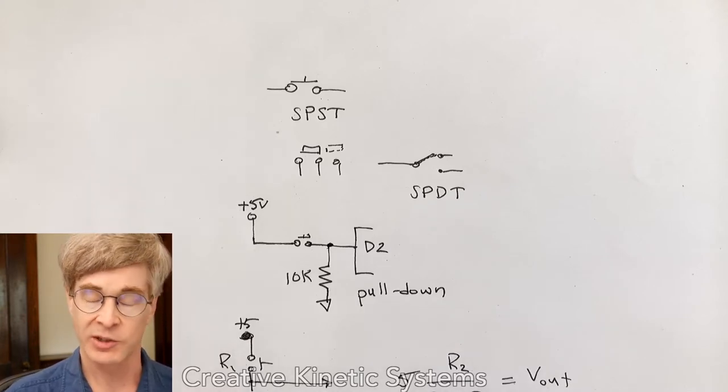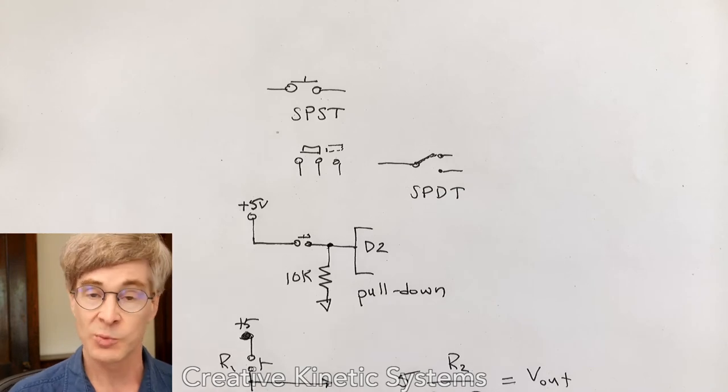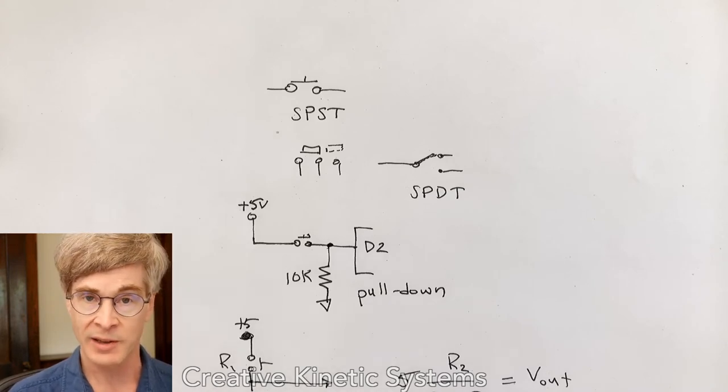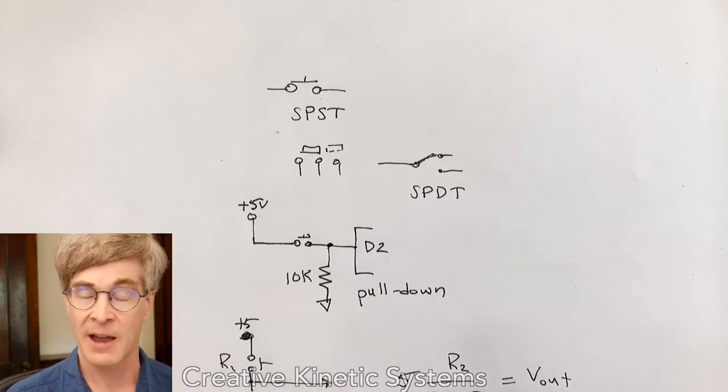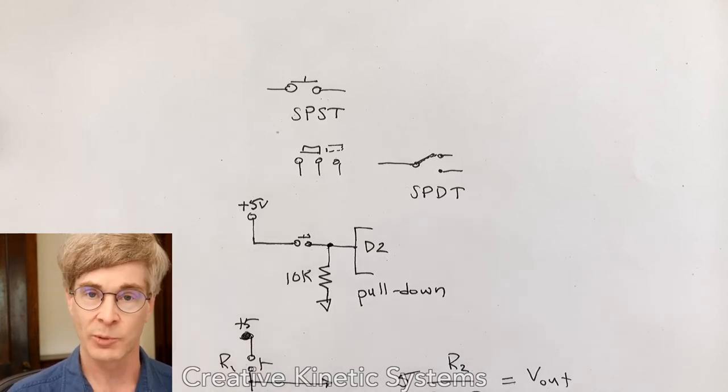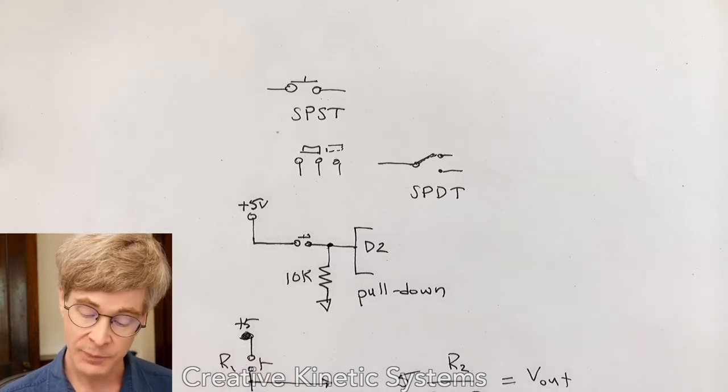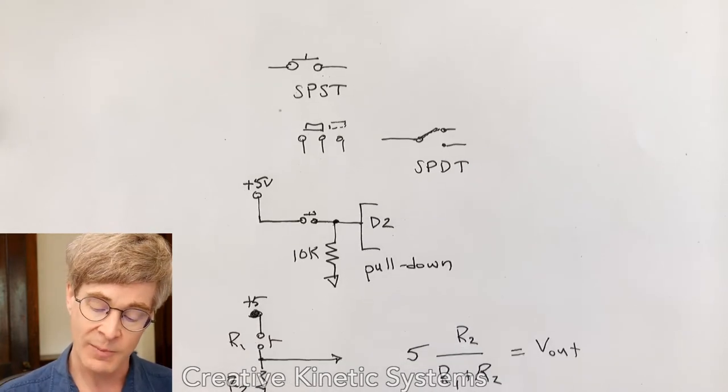This is what we might consider positive logic, or maybe simply plain logic, in that the voltage will be zero when the switch is unactuated, and when the switch is actuated, it becomes five volts or positive. And so in programming terms, there's a simple relationship where the low signal to zero is off and the one is on. If we simply wire them in the opposite order,